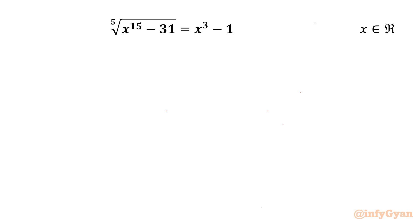Welcome back to Infigyan. In today's video we have one very interesting and challenging radical equation problem: the 5th root of x to the power 15 minus 31, equal to x cubed minus 1. We have to find all real solutions.